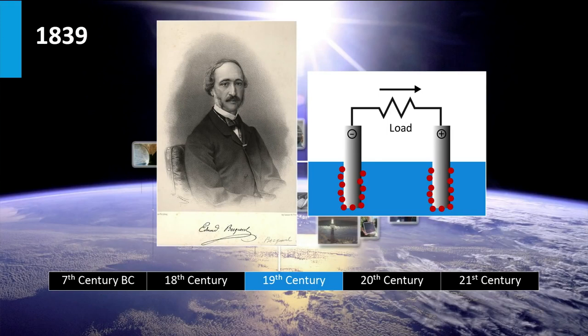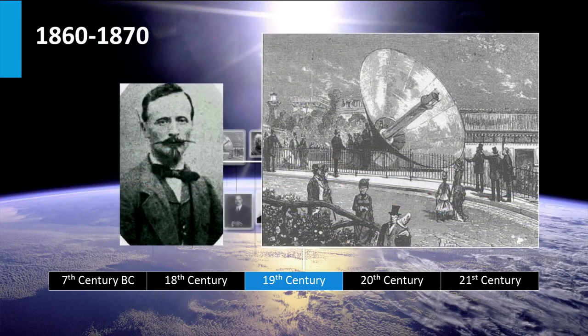By shining light on it, he observed that the current in the cell was enhanced. In the 60s and 70s of the 19th century, the French physicist Auguste Mouchet was developing solar powered steam engines. He believed that the coal resources were limited. He developed the first parabolic trough solar collector. As coal became cheaper, the French government decided that solar energy was too expensive and stopped funding Mouchet's research.